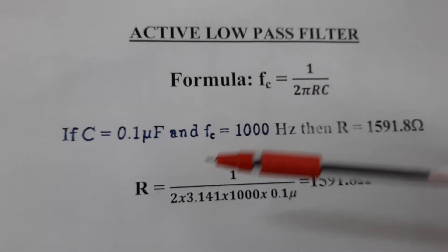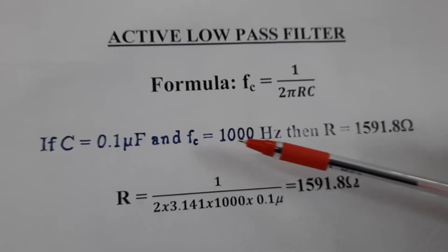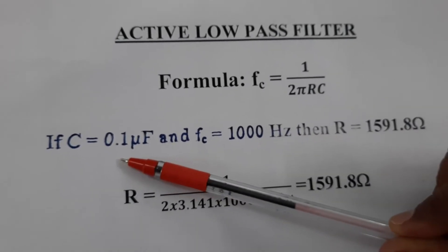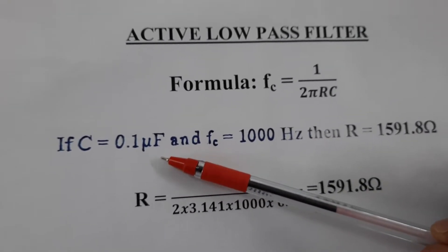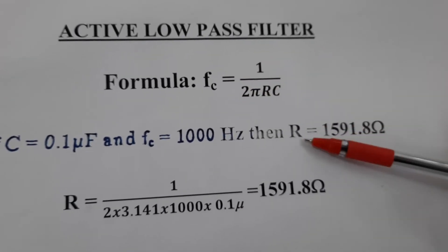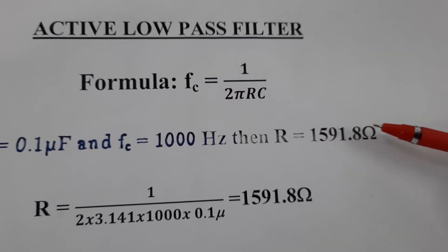As a second example, for a cut-off frequency of 1000 hertz and a capacitance of 0.1 microfarad, using this formula, the R turns out to be 1592 ohms.